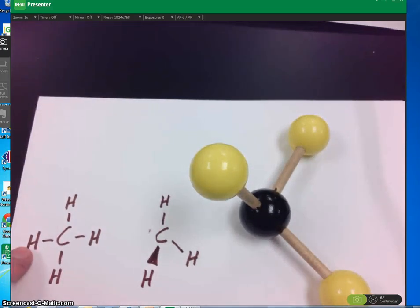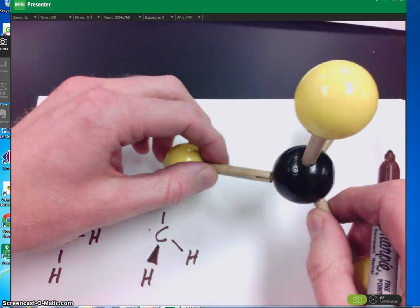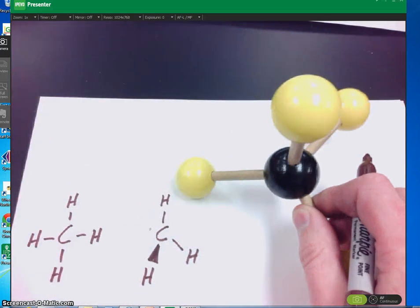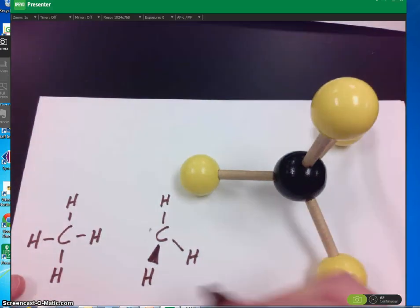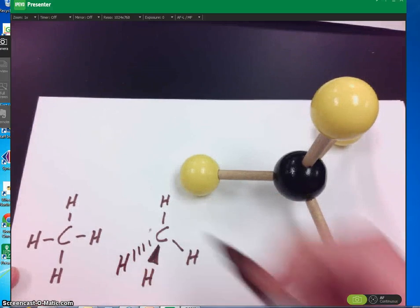Now the fourth hydrogen, that one is projecting away from you. The way that we show it's projecting away is by making a dashed line.